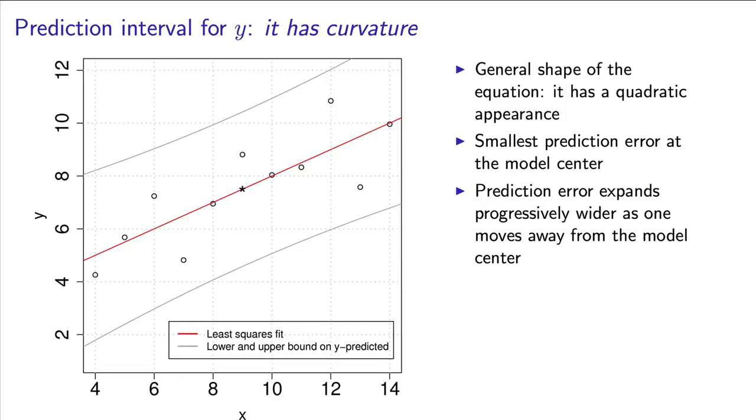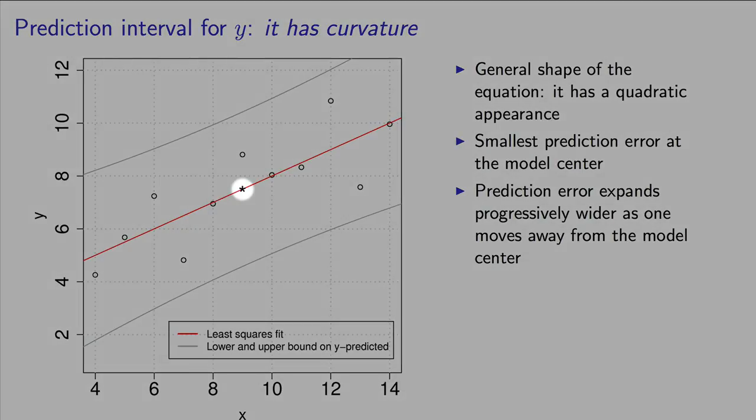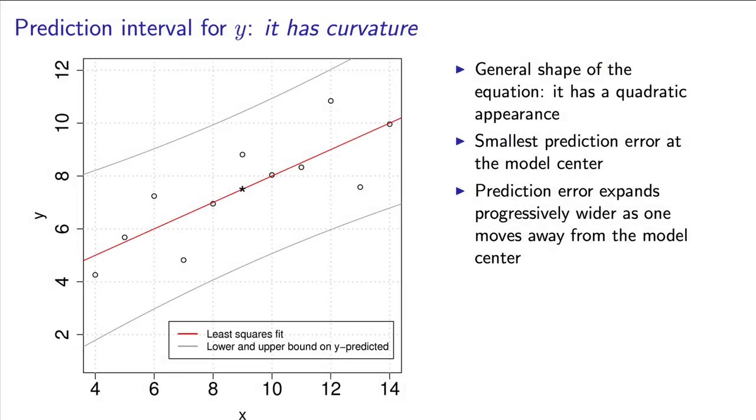Let's visualize it geometrically. You'll notice the slight curvature in the lines, which indicates to us that as we go further and further away from the center of the model, indicated there with the asterisk, that our prediction interval for y gets wider and wider as you go away from that model's center.